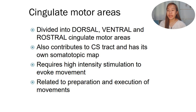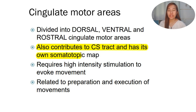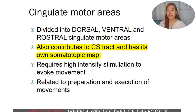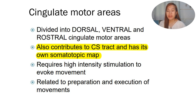The cingulate motor areas are divided into dorsal (posterior), ventral (anterior), and rostral cingulate motor areas. They also contribute to the corticospinal tract and have their own somatotopic map. When we talk about somatotopic, it means that a specific part of the body is associated with a distinct location in the central nervous system - a specific part of the body is associated with a specific part of the brain. These cingulate motor areas contribute to the corticospinal tract.